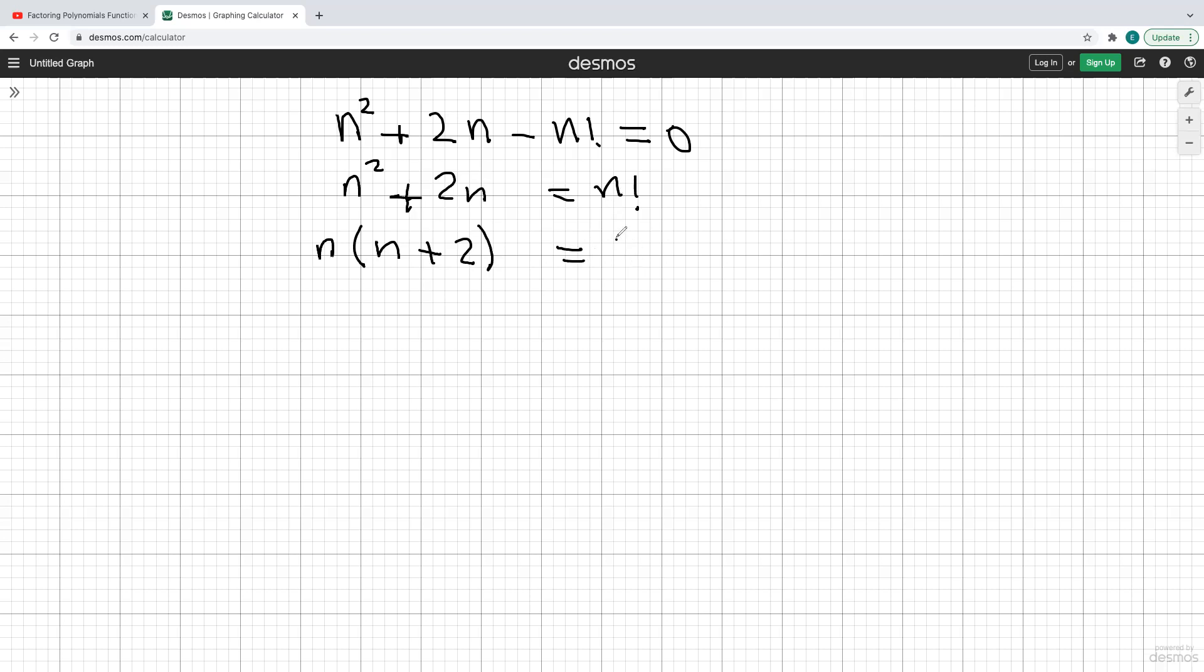And what I can do here, I could expand this to n times n minus 1 factorial. At this stage, what I'm going to do, I'm going to cancel the n from here and here.